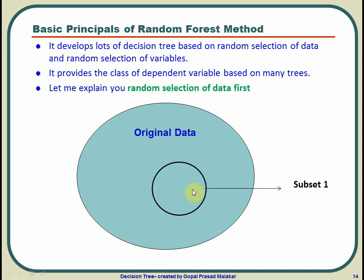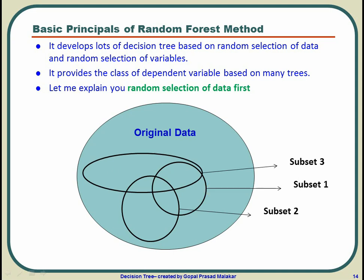So probably if this is the first subset, the second subset can be like this, third subset can be like this, each can have different size of the observations that it is using to develop the tree. There can be some overlap, there may not be some overlap.